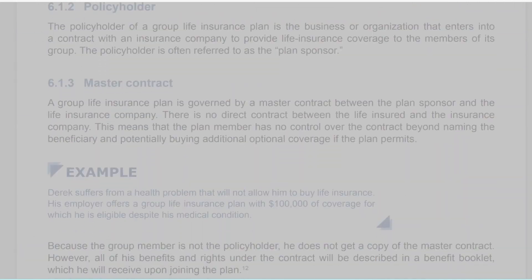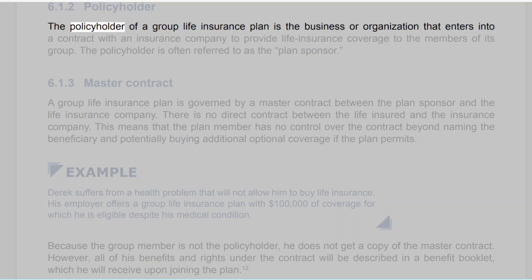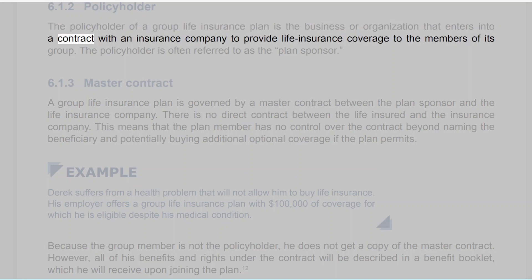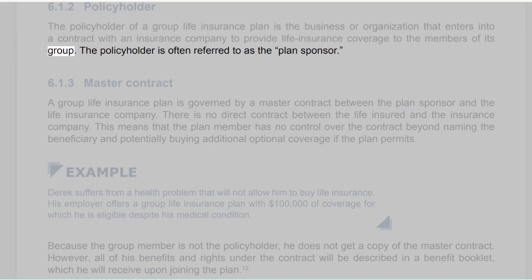6.1.2 Policyholder. The policyholder of a group life insurance plan is the business or organization that enters into a contract with an insurance company to provide life insurance coverage to the members of its group. The policyholder is often referred to as the plan sponsor.